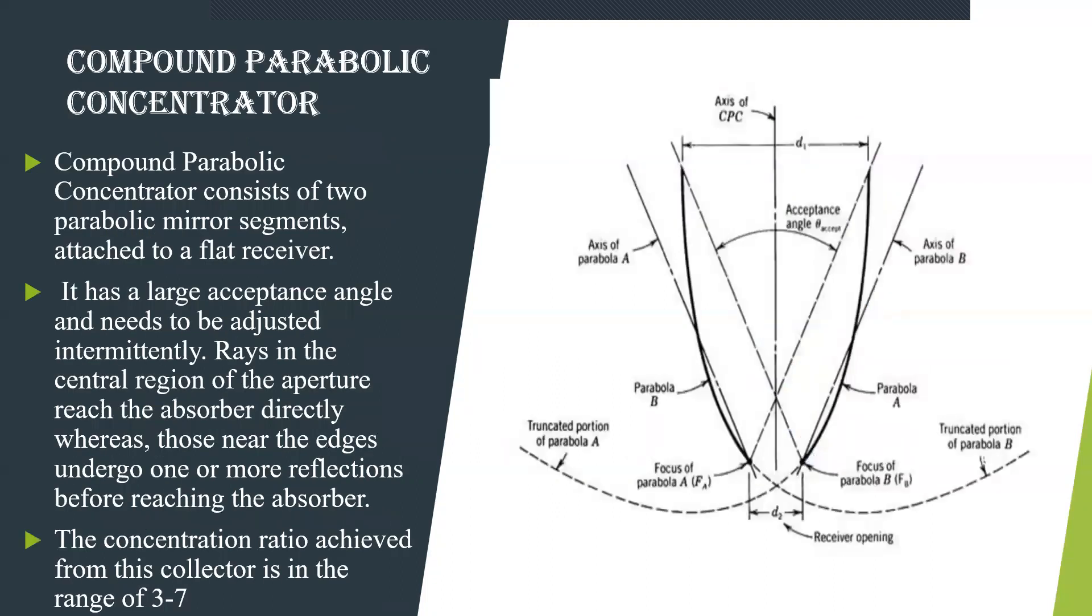Next, moving into compound parabolic concentrator. Here what happens is you can see there is a compound mirror that is attached to the flat surface. Consider this as a flat surface and you have a mirror and these are the segments where it is oriented. You can see axis of one parabola, parabola B, parabola C and this is the axis. This is the acceptance angle. These segments are oriented such that the focus of one will be located at the bottom end point of the other.